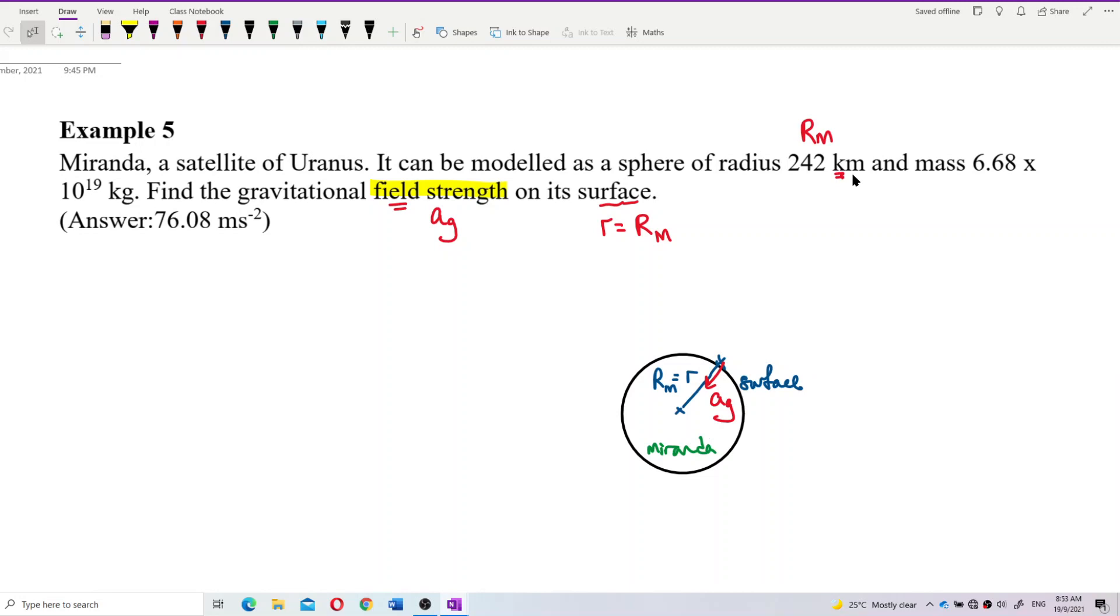But it's kilometer. So, we need to change to meter, exponent 3. And mass, this is the point mass. This is the mass of Miranda. The point mass. It is the provider of the field. This mass provides the gravitational field strength.